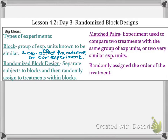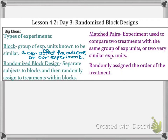Matched pairs is an experiment used to compare two treatments with the same group of experimental units, or two very similar experimental units. You still want to randomly assign the order of treatments — even though you're blocking or pairing in some way, randomization must remain. In our GPA example, we flipped a coin to decide who went into which group.